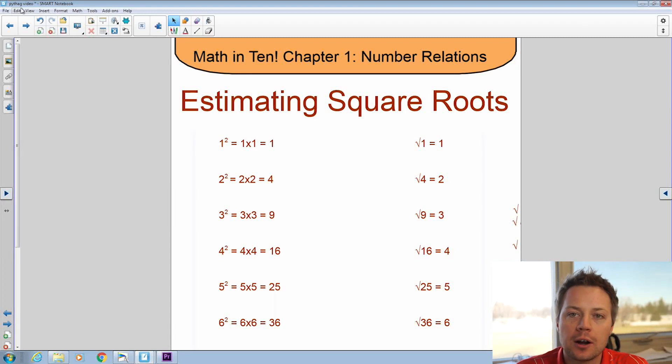Now let's try and estimate some square roots of whole numbers that might not be perfect squares. What I mean by that, what if we had a number like what is the square root of 28? So we're going to try and estimate to one decimal point what the square root of 28 is.